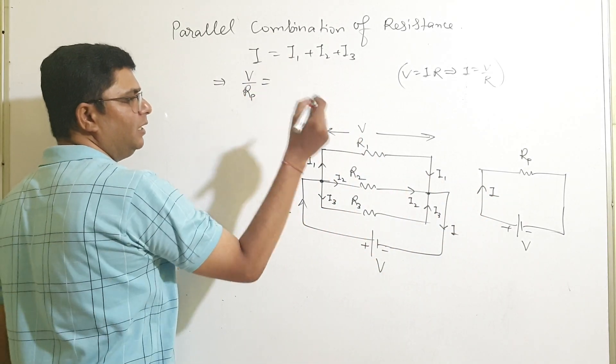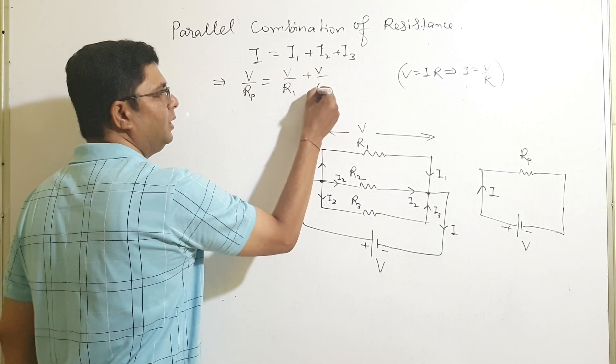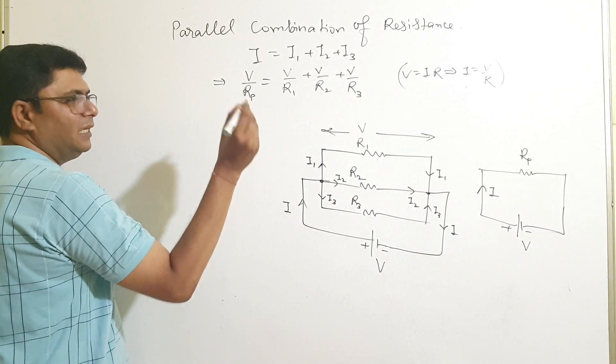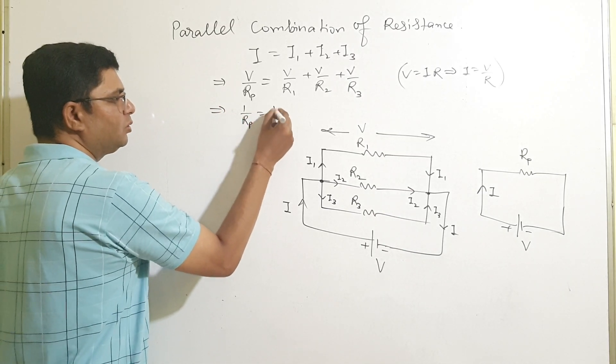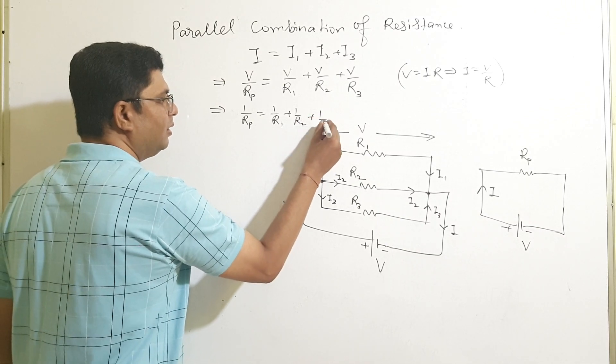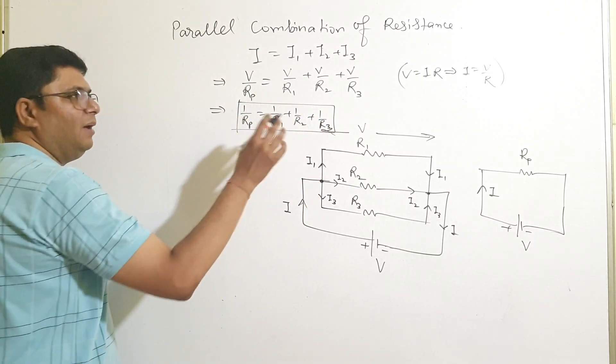What is I1? I1 is V upon R1, this is V upon R2, V upon R3. Cancel the V, you have 1 by Rp is equal to 1 by R1 plus 1 by R2 plus 1 by R3.